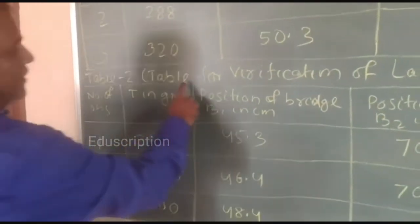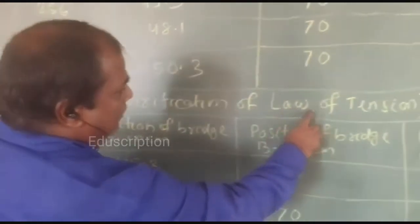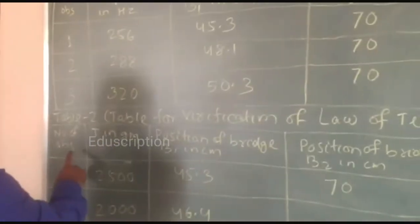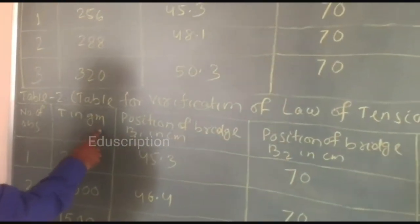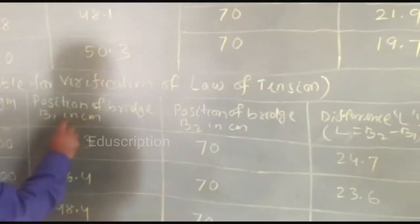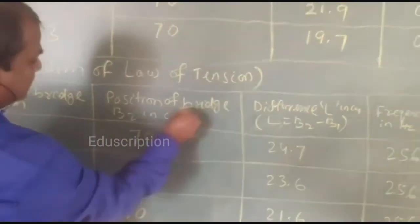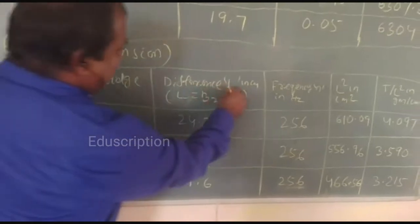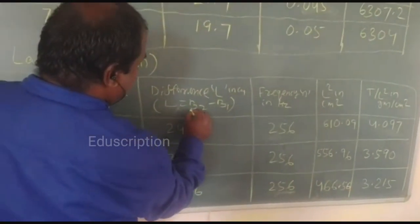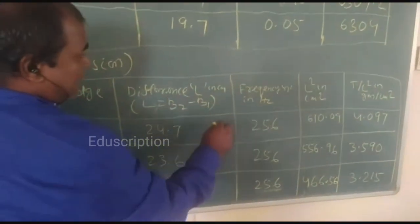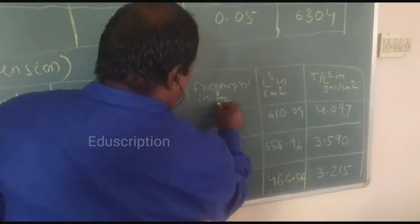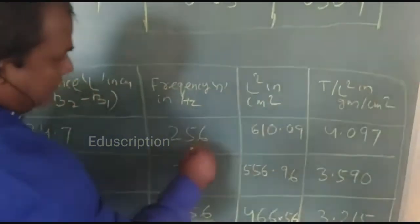Table 2, table for verification of law of tension. Similarly, number of observations, T in gram, position of bridge B1 in centimeter, position of bridge B2 in centimeter, difference L in centimeter that is L is equal to B2 minus B1. Then frequency in hertz, all are constant, that is 256.